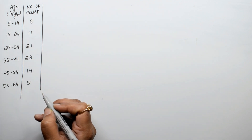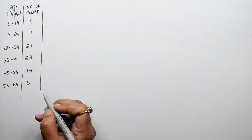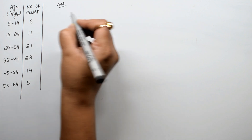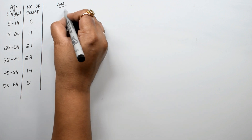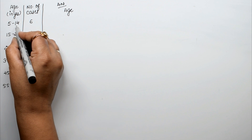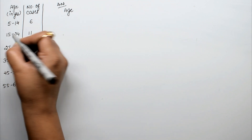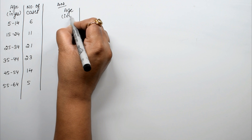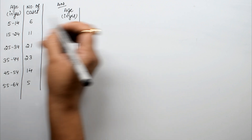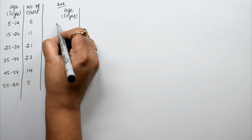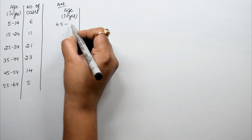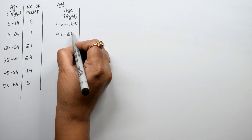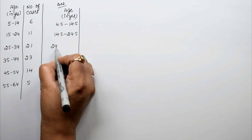We need to find the average age of patients, which means we need to find the mean. Since the outer limit of one class equals the lower limit of the next, we create a new table in years by subtracting 0.5 from the lower limit and adding 0.5 to the upper limit.